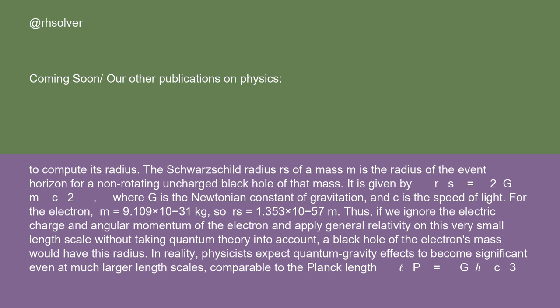For the electron, M = 9.109 × 10⁻³¹ kg, so RS = 1.353 × 10⁻⁵⁷ m. Thus, if we ignore the electric charge and angular momentum of the electron and apply general relativity on this very small length scale, without taking quantum theory into account, a black hole of the electron's mass would have this radius.